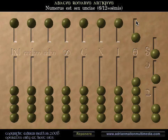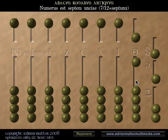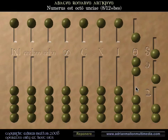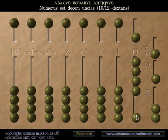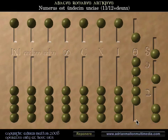Sex unciae? Six ounces, six twelfths. Septem unciae? Octo unciae? Novem unciae? Nine twelfths. Decem unciae? Undecim unciae? Eleven twelfths.